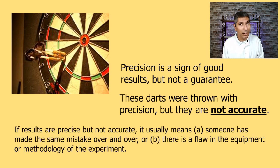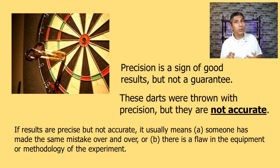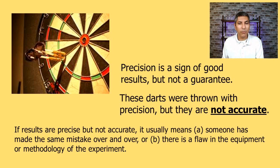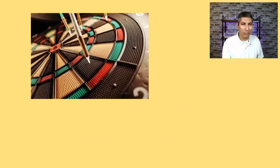Sometimes this happens in the laboratory too. If we have results that are precise but not accurate, there's probably something going on. There's a chance that someone is making the same mistake over and over again. Or it's also possible that there's a flaw in the equipment that we're using or perhaps the methodology of our experiment. So just because something is precise doesn't always mean that it's accurate as well, although it's always good to be precise and accurate.